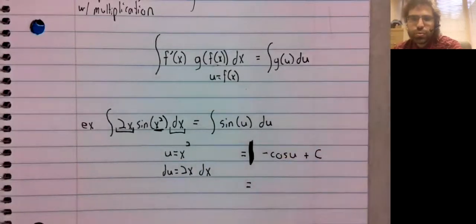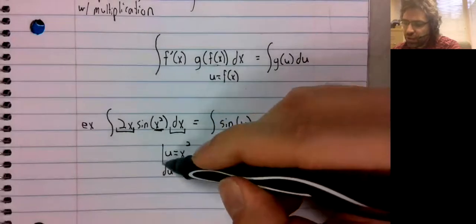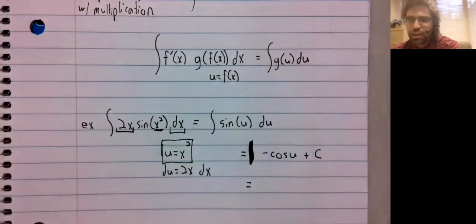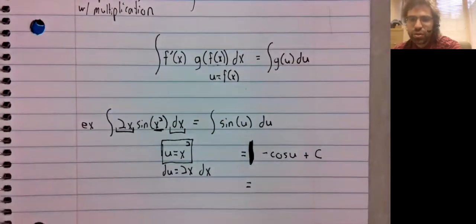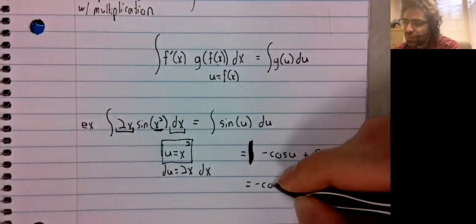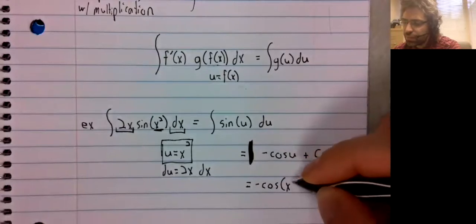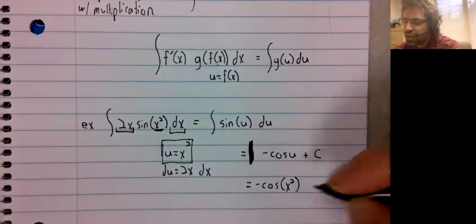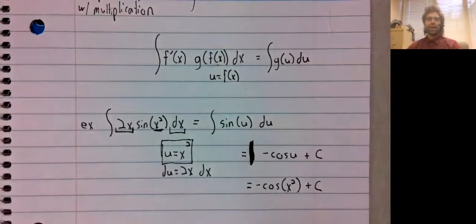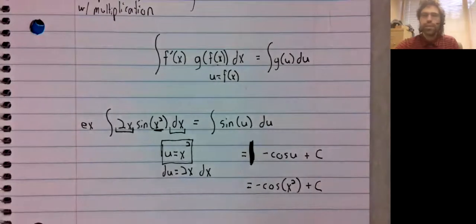And u is just a dummy variable. We don't want it in the answer. Fortunately, we know what u is. It is x squared. And that is u-substitution.